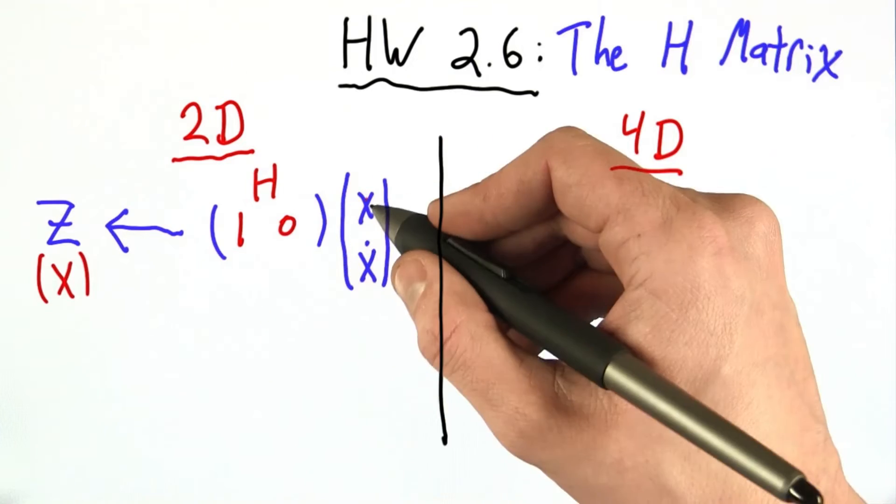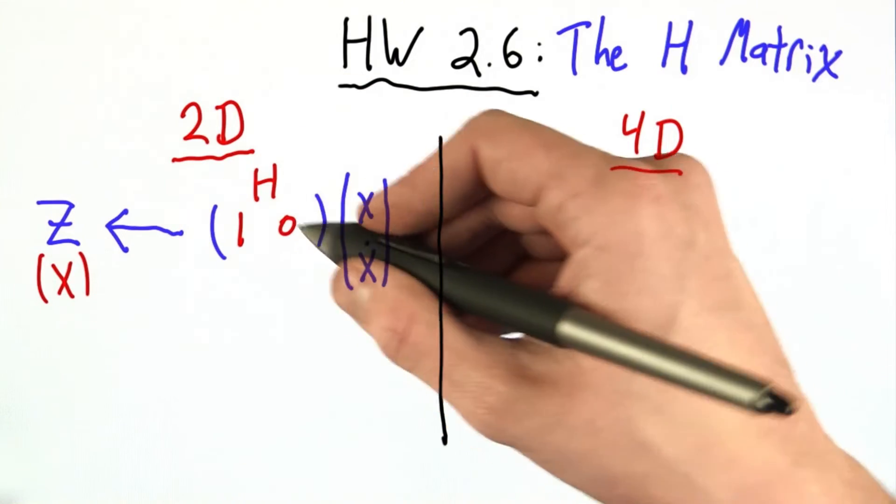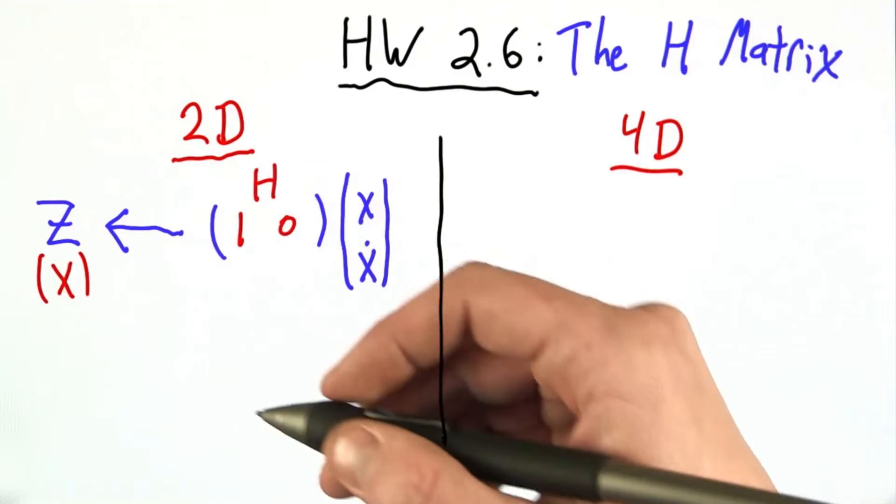1, 0, because 1 times x gives us the x. 0 times x dot gives us nothing, exactly what we want.